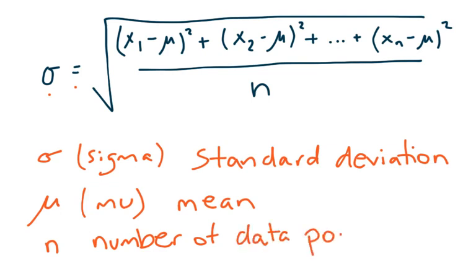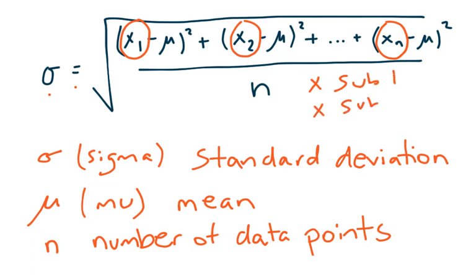And then the only other thing you can see up there is we've got this x with a little one, x with a little two, x with a little n. The formal way of saying that would be x subscript one, x subscript two, down to x subscript n. Or for short, a lot of times we'll just say x sub one, x sub two, instead of saying subscript.